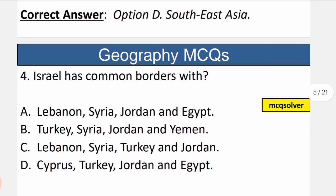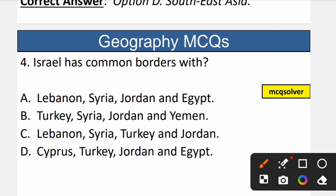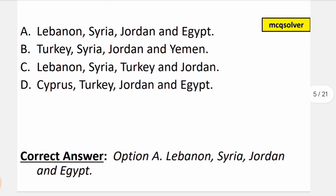Question number 4: Israel has common borders with which countries? The correct option is A — Lebanon, Syria, Jordan, and Egypt. Israel shares common borders with all four of these countries. So A is the correct option.